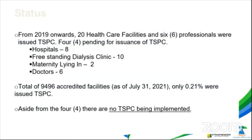This is the status of how many have been issued TSPC throughout the years. From 2019 onwards, only 20 health facilities and 6 professionals were issued TSPC, with 4 pending issuance. Of the 20, 18 are hospitals, 10 are dialysis clinics, 2 are maternity lying-in, and the 6 professionals are doctors. As of July 31, 2021, PhilHealth has a total of 9,496 accredited providers, so only 0.21% were issued TSPC. As of today, aside from the 4 pending, no TSPC is currently imposed by PhilHealth.